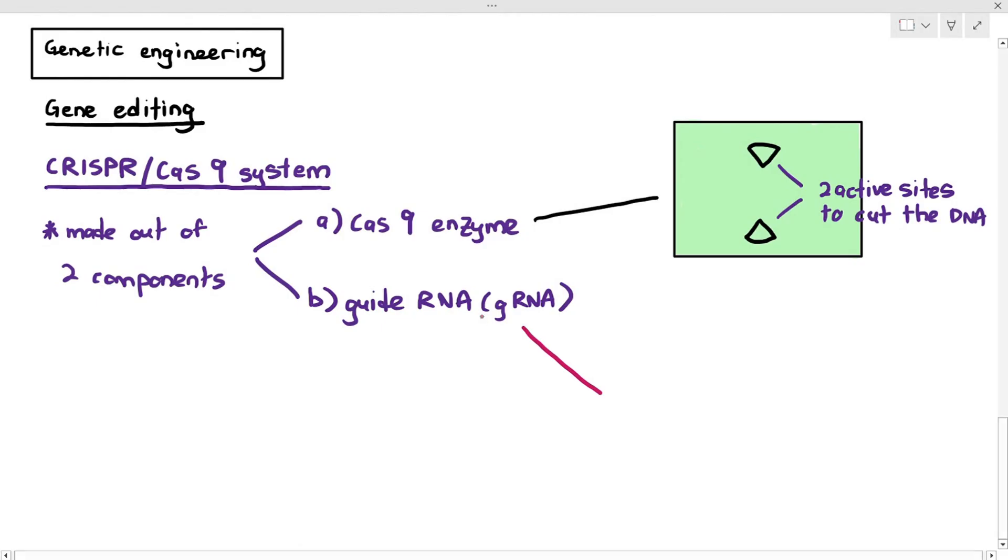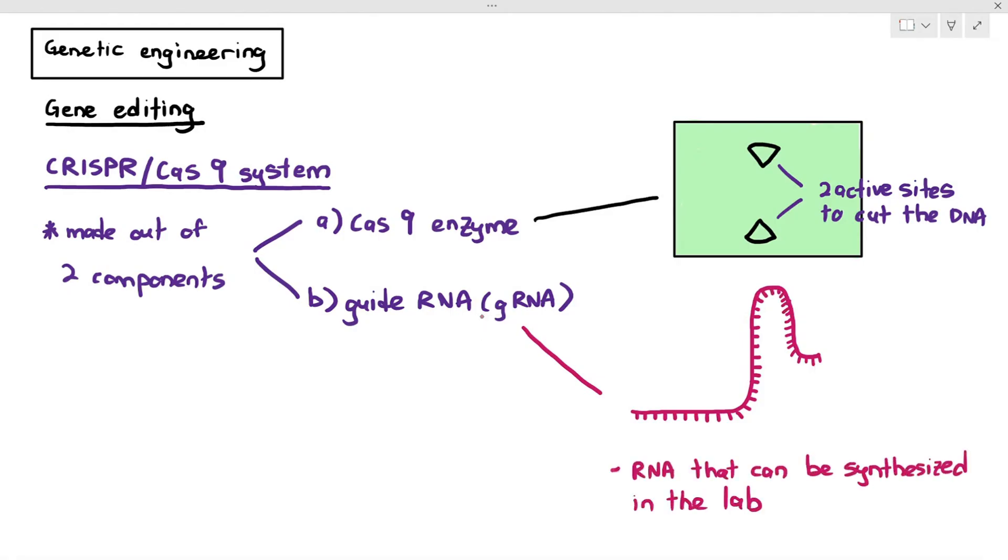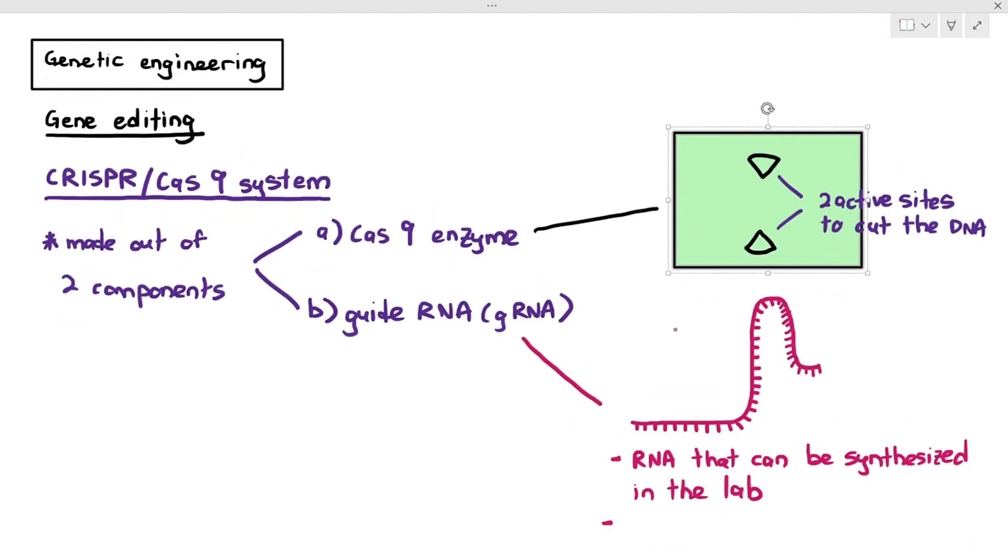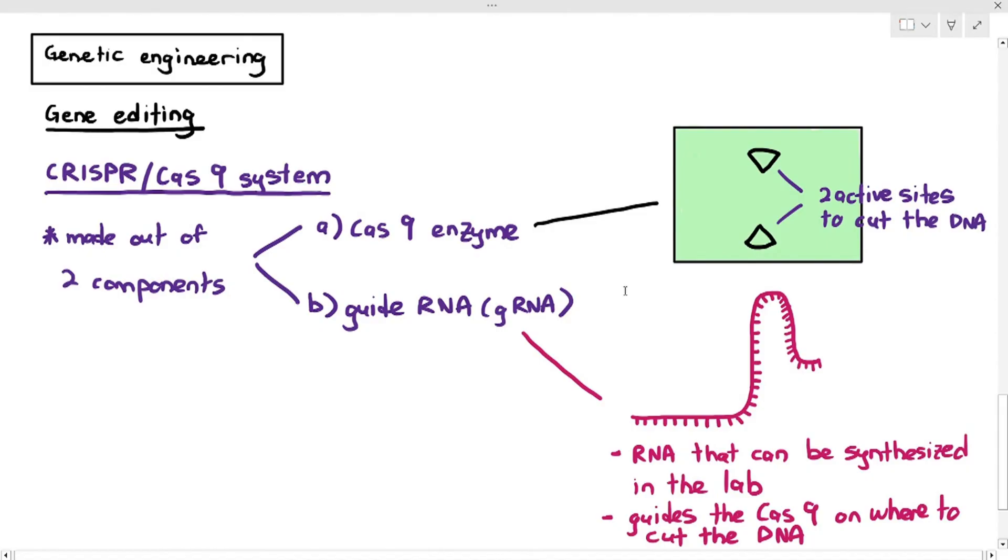Now, a guide RNA is an RNA that can be synthesized in the lab, which means to say it is an artificial molecule. And the reason why it's called the guide RNA is because this gRNA will guide the Cas9 enzyme on where to cut the DNA. The Cas9 enzyme will not just cut the DNA whenever and wherever it wants to. It needs to know where to cut the DNA. And the gRNA is the one that guides the Cas9 enzyme.